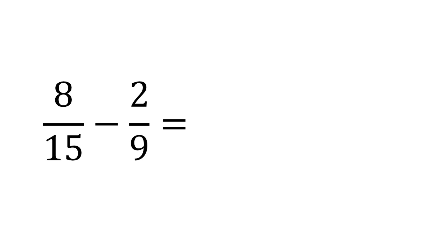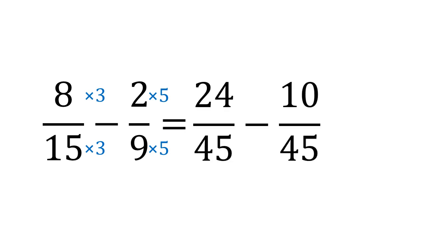We use the exact same method for subtraction. Take eight fifteenths minus two ninths — a slightly tricky one. Let's find the lowest common multiple: 15 and nine both go into 45. We change both into equivalent fractions over 45 by multiplying the top and bottom of the first by three, and the top and bottom of the second by five, giving us 24 over 45 minus 10 over 45, which is 14 over 45.